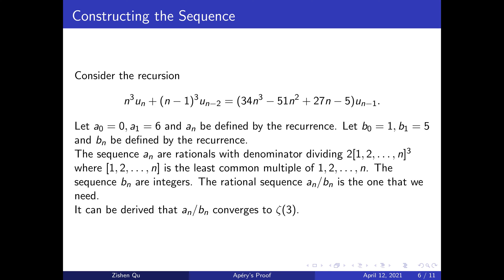The sequence a_n defined this way are rationals with the denominator dividing 2 times the cube of the least common multiple of 1 to n. The sequence b_n is an integer sequence. We consider a_n/b_n to be the rational sequence that we need. It can be shown that a_n/b_n converges to ζ(3).